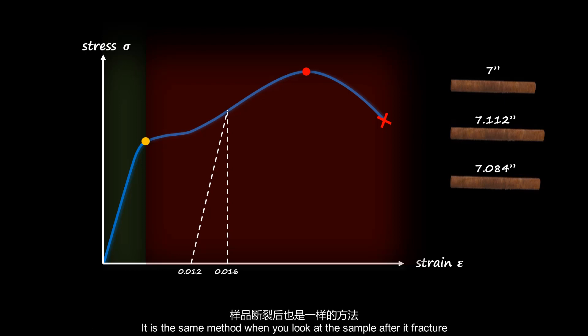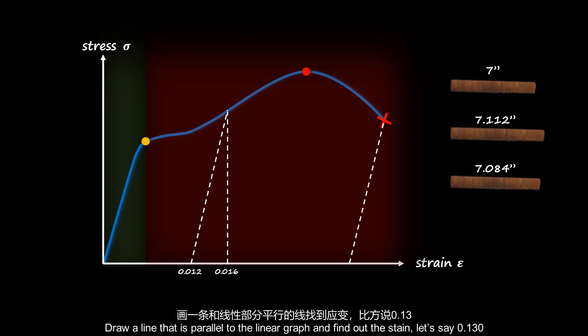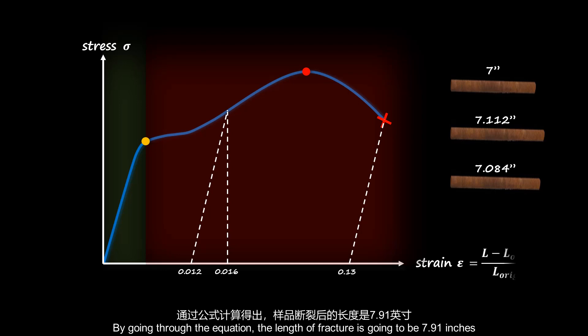It is the same method when you look at the sample after a fracture. Draw a line that is parallel to the linear graph and find out the strain, let's say 0.13. By going through the equation, the length of fracture is going to be 7.91 inches.